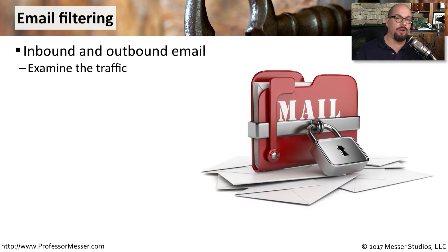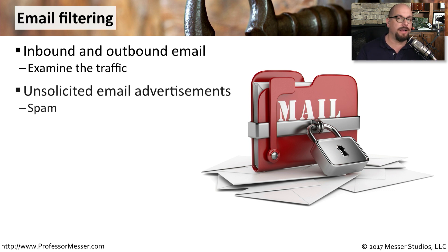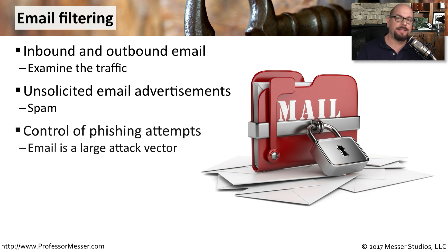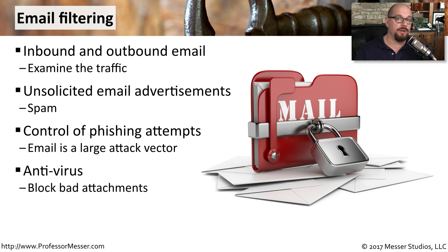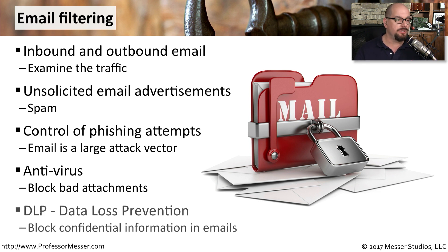This email gateway allows you to examine all of the communication, both inbound and outbound, of your network. You can identify when unsolicited spam advertisements are being emailed inbound. And if this inbound email appears to be a phishing attempt, you can block it at the gateway or modify the link before it arrives into the recipient's inbox. It's very common to include antivirus on these email gateways so that all inbound and outbound attachments can be scanned. It's also common to include data loss prevention on the email server, so that if somebody's sending or receiving an email that contains personal or proprietary information, it can be filtered out at the gateway.